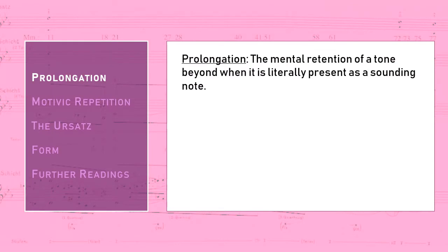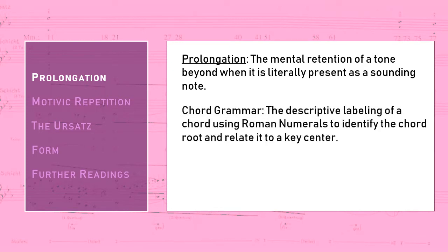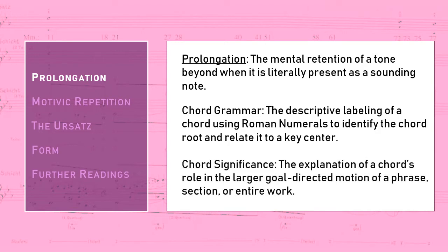We can also use the concept of prolongation to tell differences in behavior of different chords and harmonies. One of Schenker's students, Felix Salzer, introduced a distinction between chord grammar and chord significance. Chord grammar is the descriptive labeling of a chord using Roman numerals to identify the chord root and relate it to a key center. Chord significance, on the other hand, is the explanation of a chord's role in the larger goal-directed motion of a phrase, section, or entire work. Two chords can have the same chord grammar and very different chord significance.